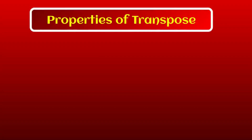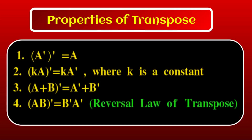Next are the properties of transpose. First: (A^T)^T = A. Second: (kA)^T = k·A^T where k is a scalar. Third: (A+B)^T = A^T + B^T. Fourth: (A−B)^T = A^T − B^T. Fifth (very important, the reversal law): (AB)^T = B^T · A^T.